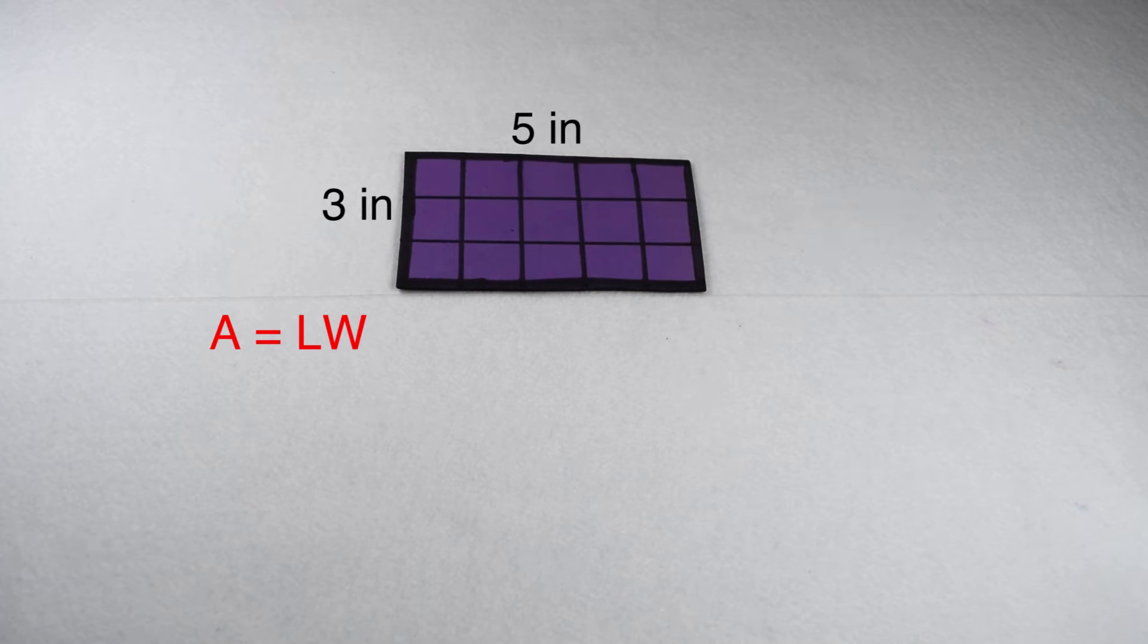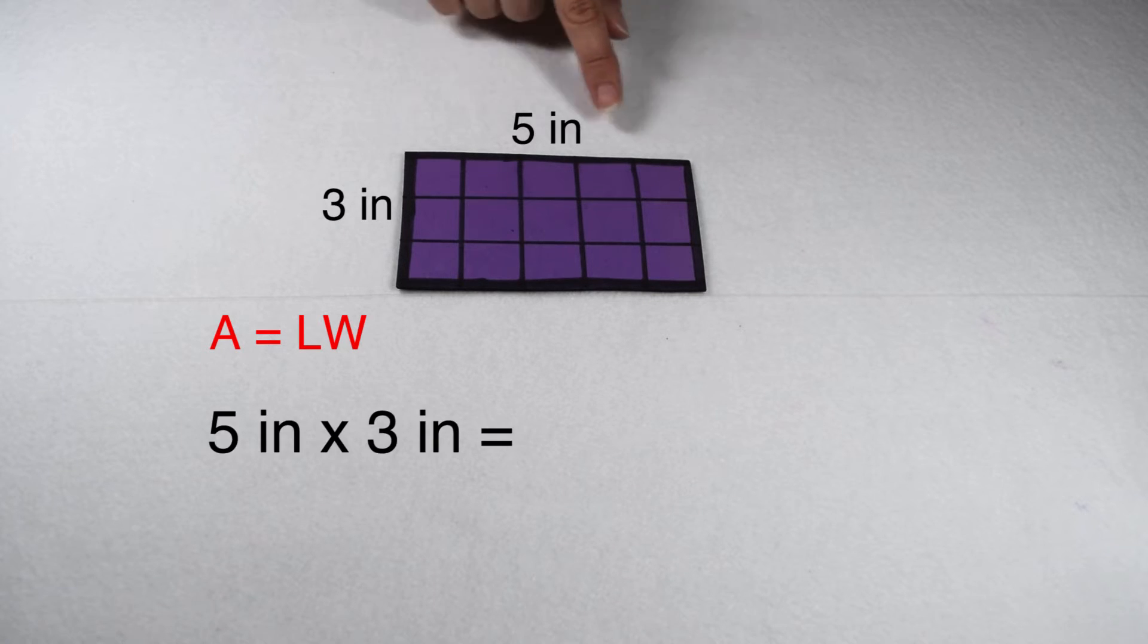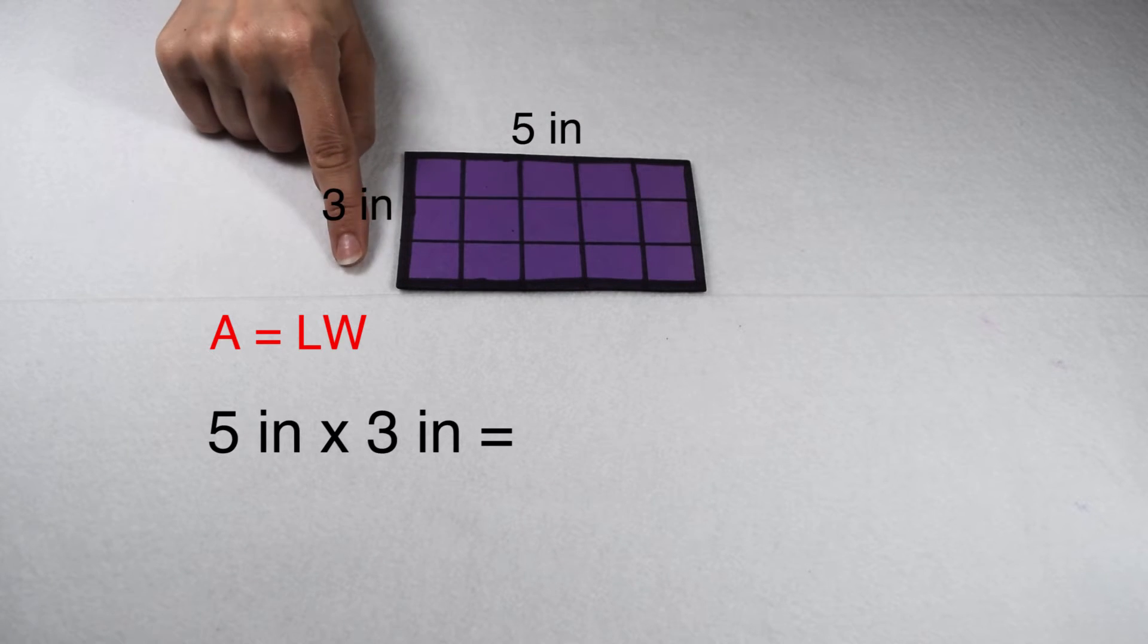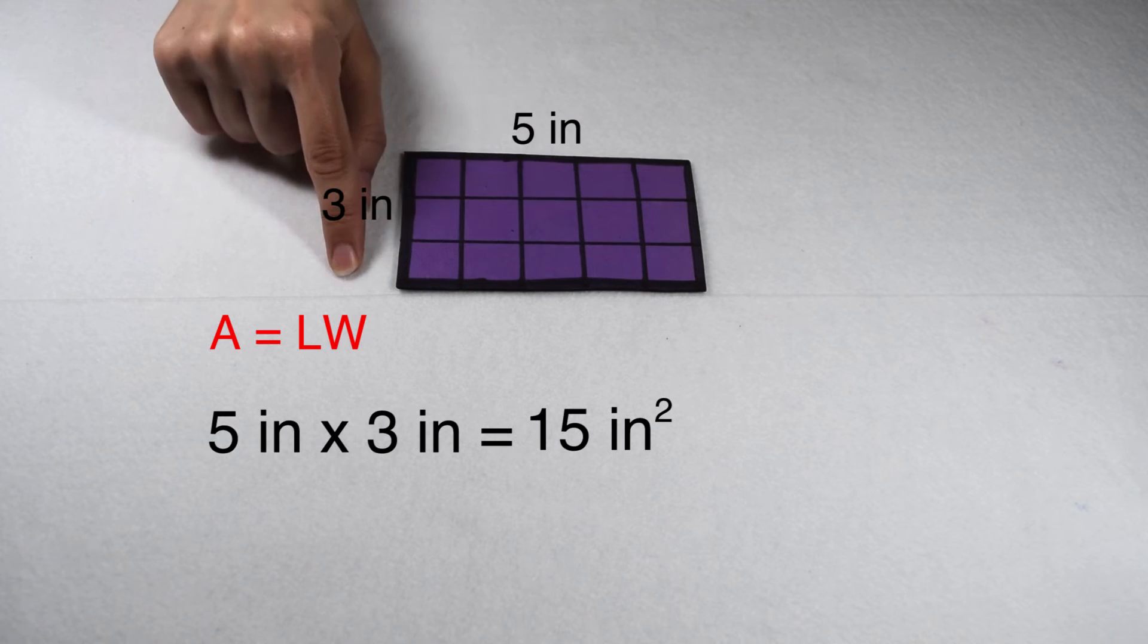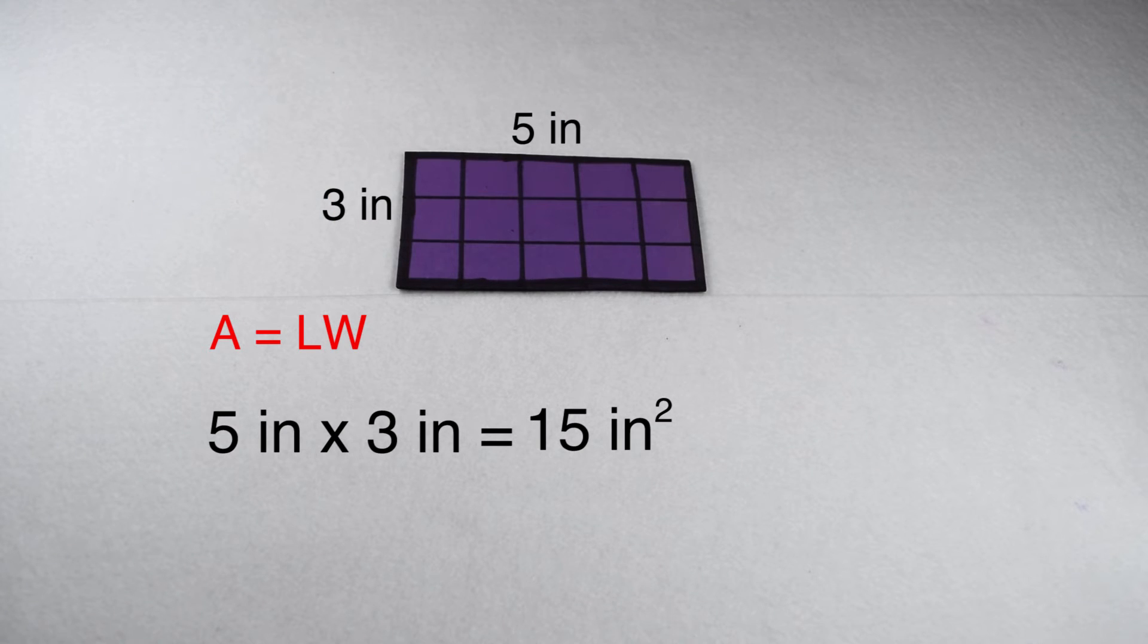If we don't want to count the squares, we could see that since there's 5 across and 3 down, that we could simply multiply the 5 by the 3. Or in other words, we're multiplying the length by the width, which brings us back to that equation, area equals length times width.